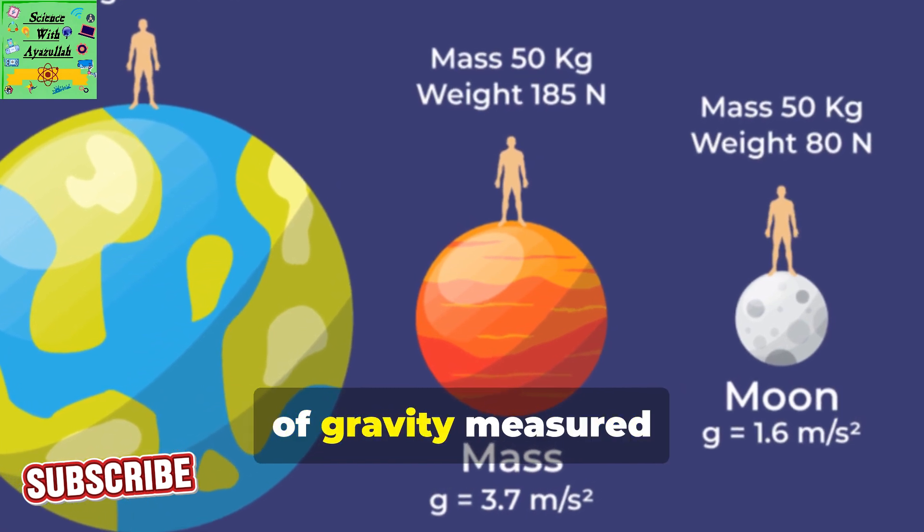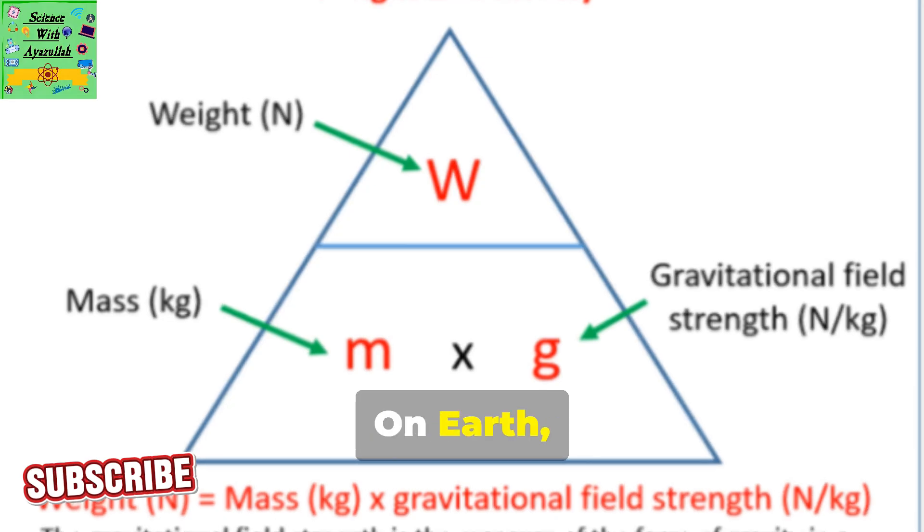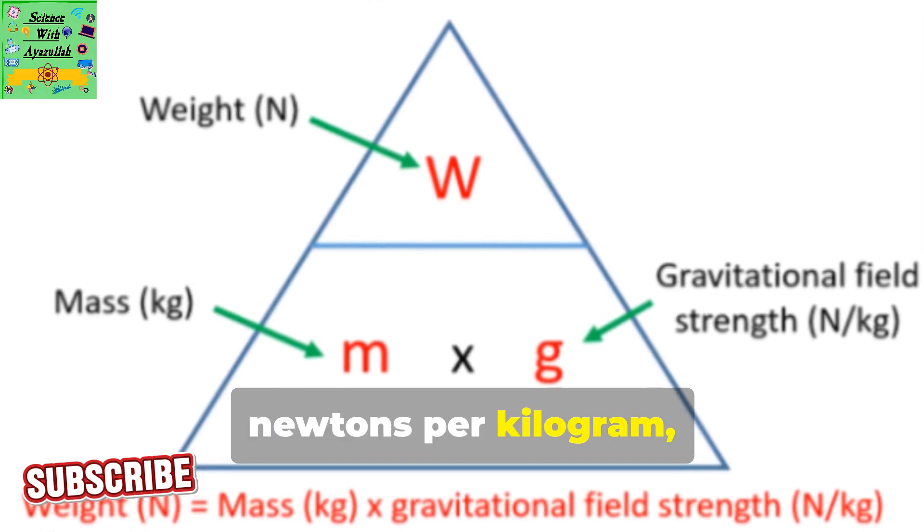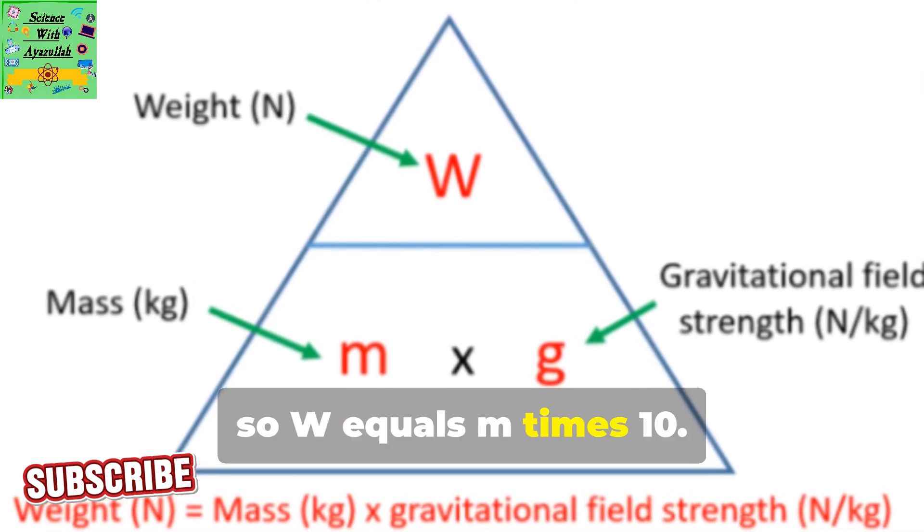Weight is the force of gravity measured in newtons. On Earth, gravity is about 10 newtons per kilogram, so W equals M times 10.